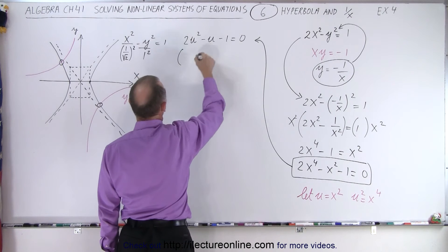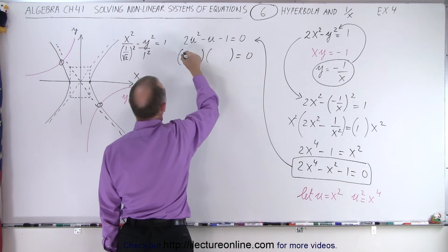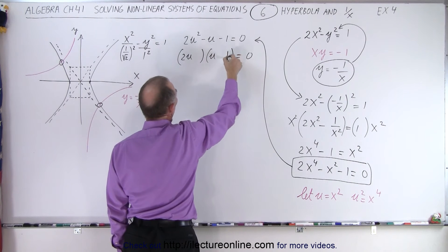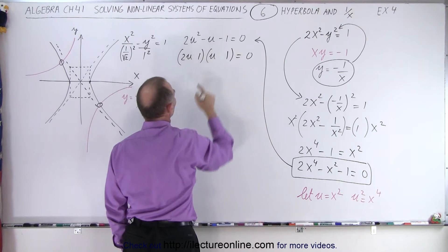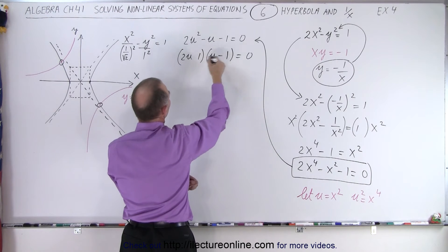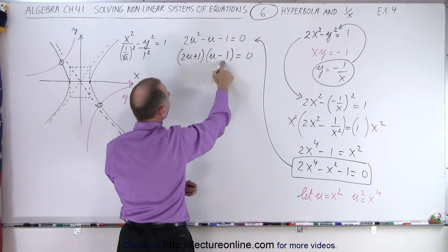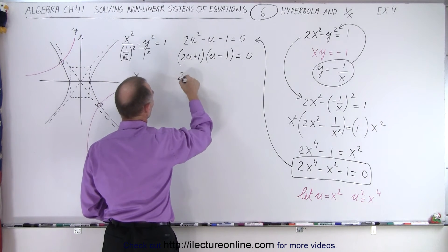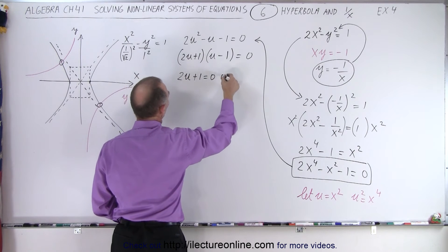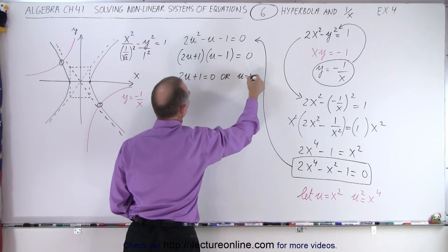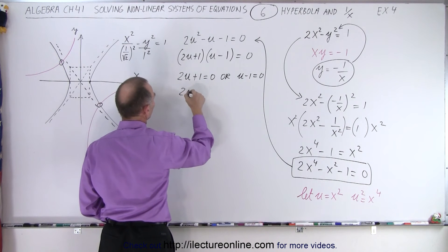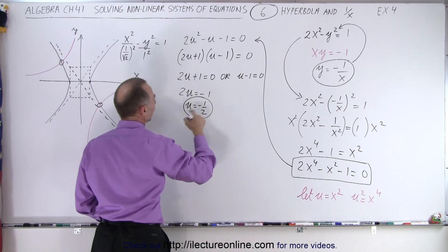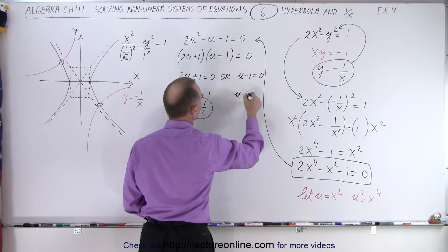Let's give it a try. We end up with a 2u and a u. The signs are positive and negative, and we need 1s, because 1 times 1 is 1, but 1 needs to be negative. With this negative and this positive, we get a negative 2 and a plus 1, and we get the middle term — so that's correct. So now we can say that 2u plus 1 equals 0, or u minus 1 equals 0, which means that 2u is equal to minus 1, or u is equal to minus 1 half. And over here, u is equal to 1.